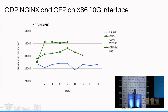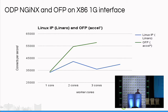We also ran this on commodity hardware on a one gigabit interface. We can see at least that on the bottom, the Linux IP stack is getting better with the number of cores, except for three cores — there's a dip we need to investigate. We're also showing this is 16 cores, but in reality it's eight real cores, so there's a dip after eight cores.